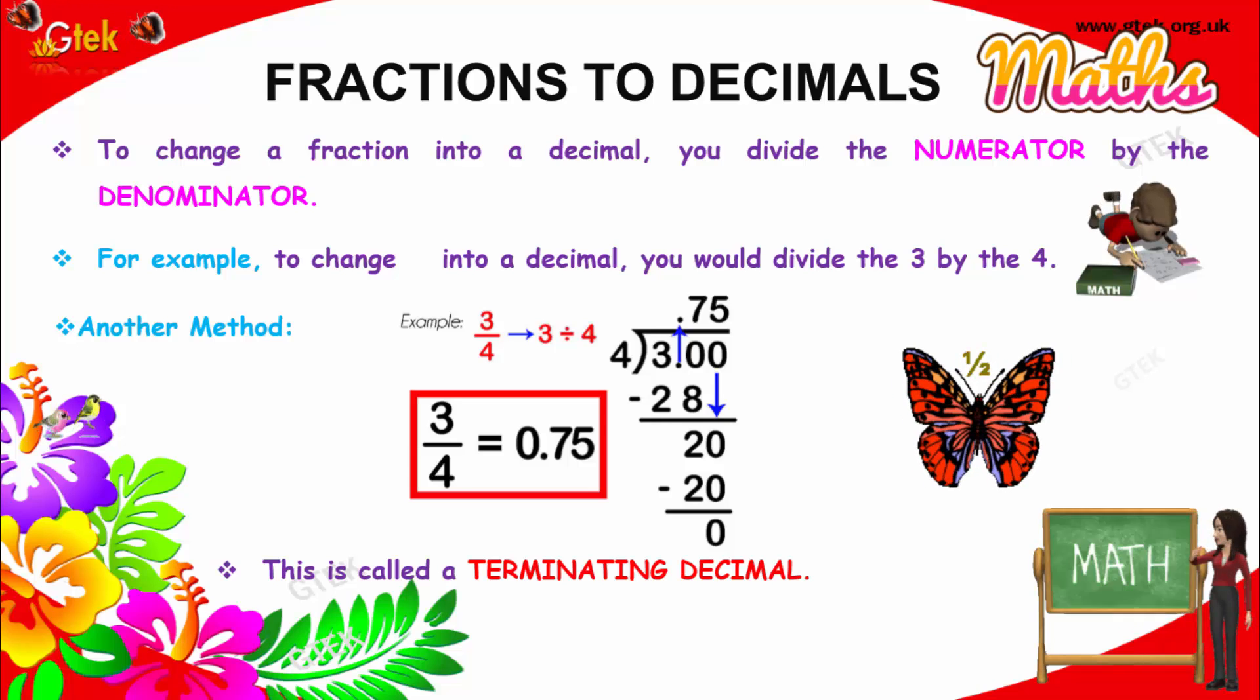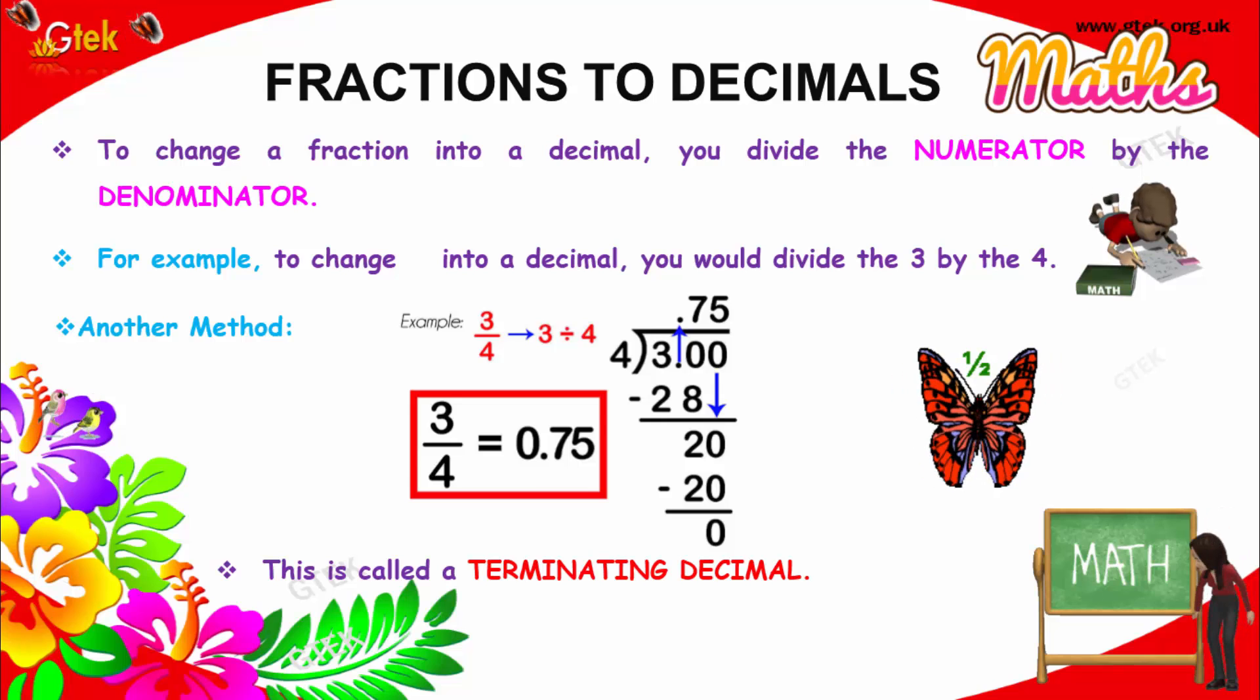So you have been given the problem: divide 3 by 4. Three divided by 4 can be represented like this. I will put 3 here.